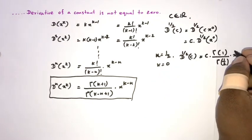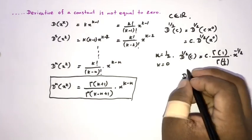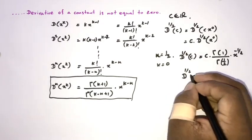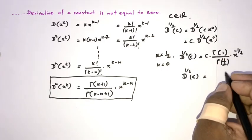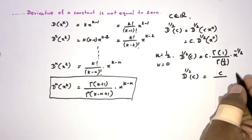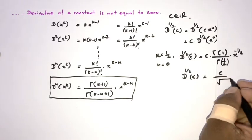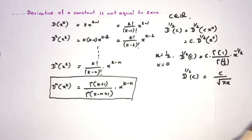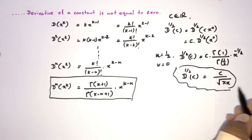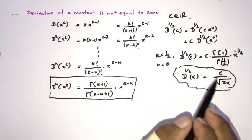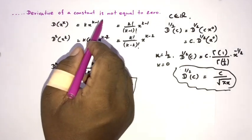So the half-derivative of constant c equals c times Γ(1) over Γ(1/2) times x to the minus one-half. Since Γ(1) equals 1 and Γ(1/2) equals the square root of π, we get c over the square root of (π times x). Therefore, the half-derivative of a constant is not equal to zero.